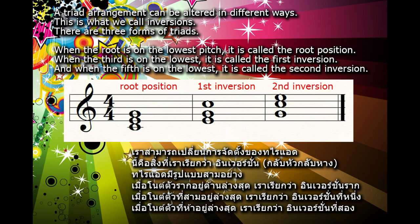There are three forms of triads. When the root is on the lowest pitch, it is called the root position. When the third is on the lowest, it is called the first inversion. And when the fifth is on the lowest, it is called the second inversion.